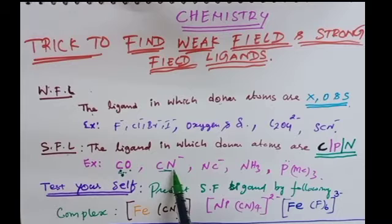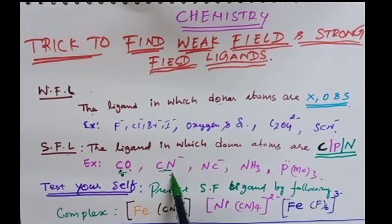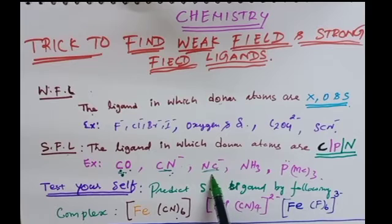In cyanide, nitrogen is a donor atom — that is a strong field ligand. Also in cyanide, carbon is a donor atom — that is also a strong field ligand.